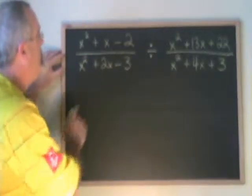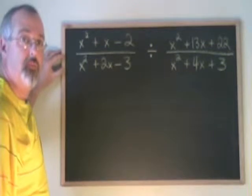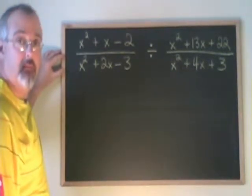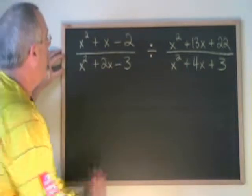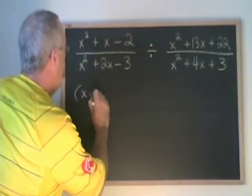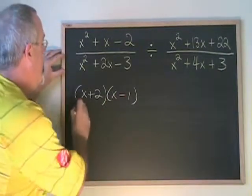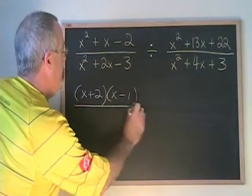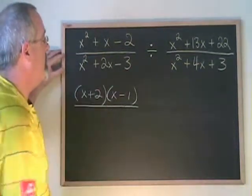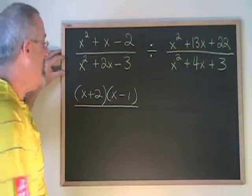In this question, we have a trinomial x squared plus x minus 2. What two numbers multiply to give negative 2 and add to give 1? They are 2 and negative 1. Second trinomial: what two numbers multiply to give negative 3 and add to give 2? They are 3 and negative 1.